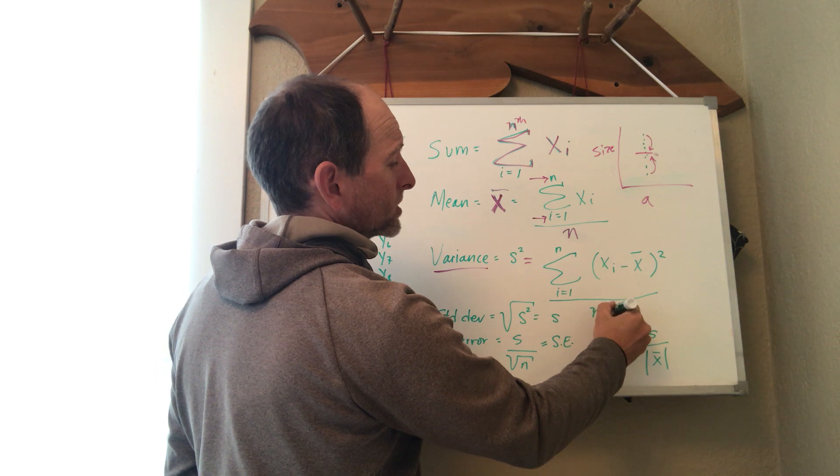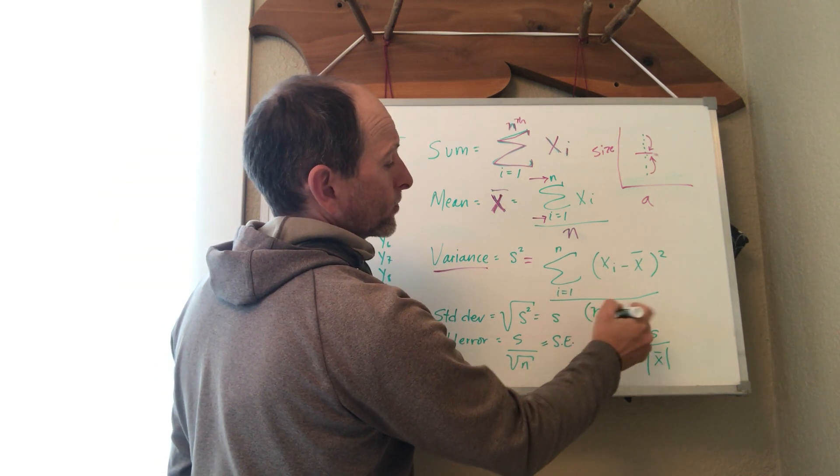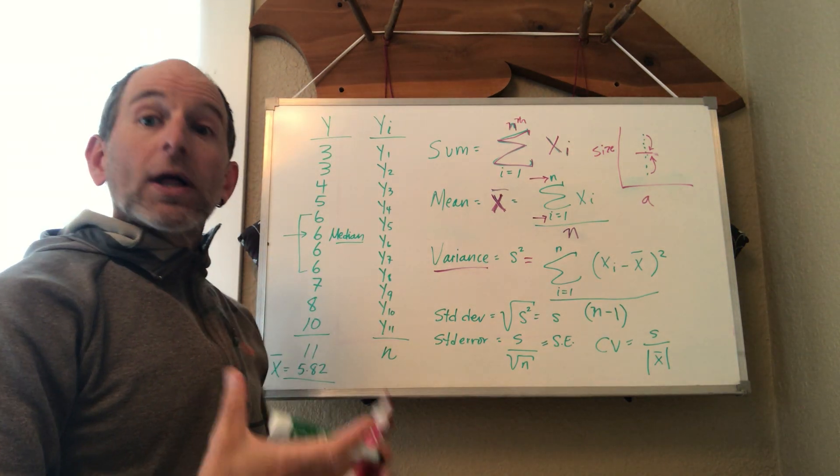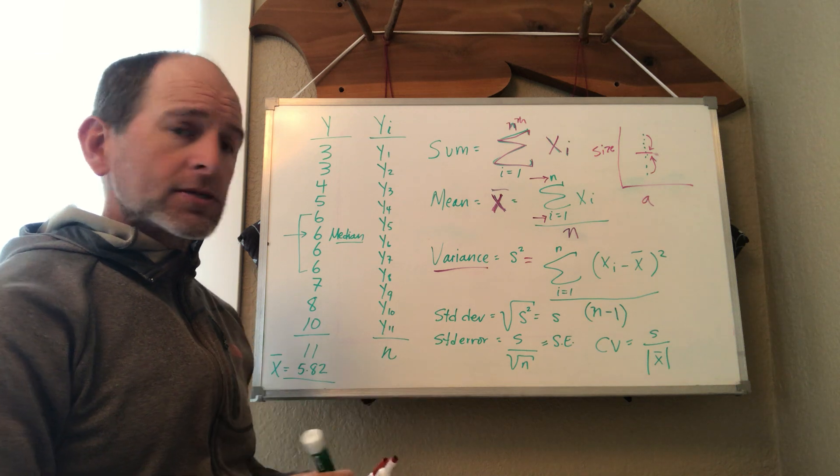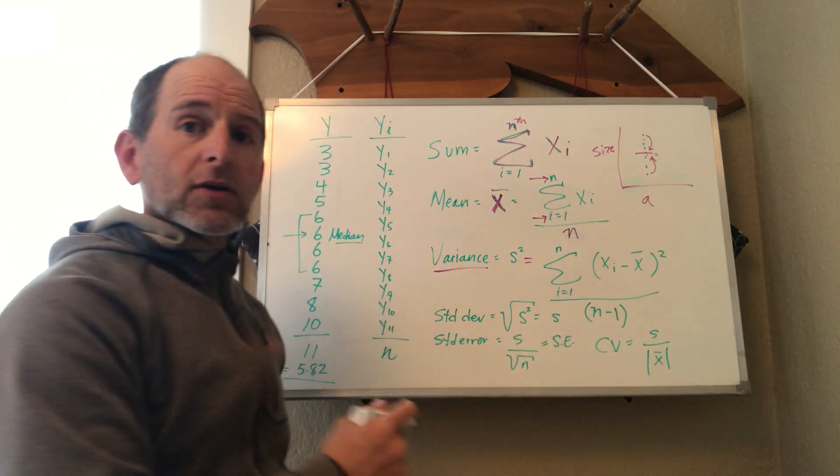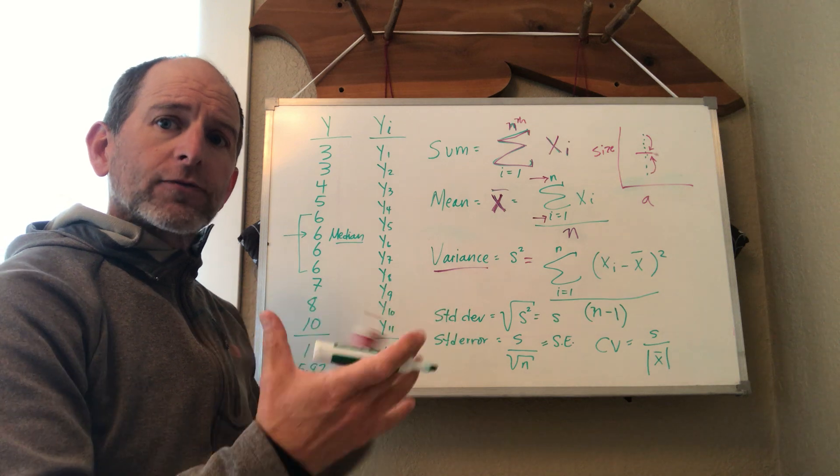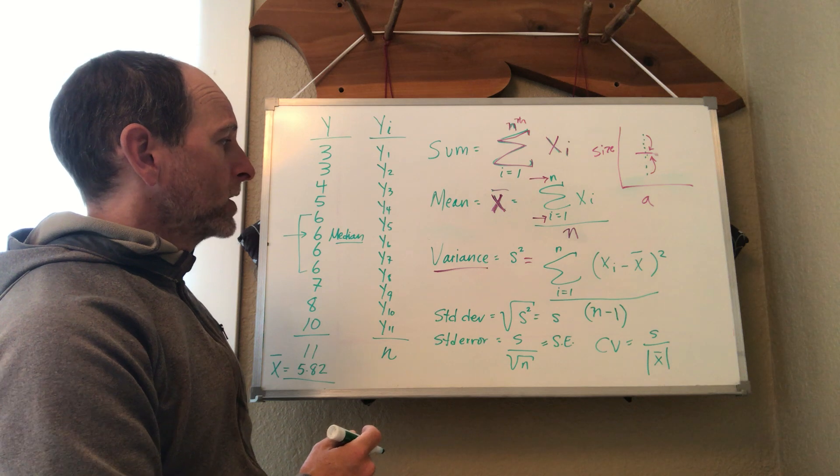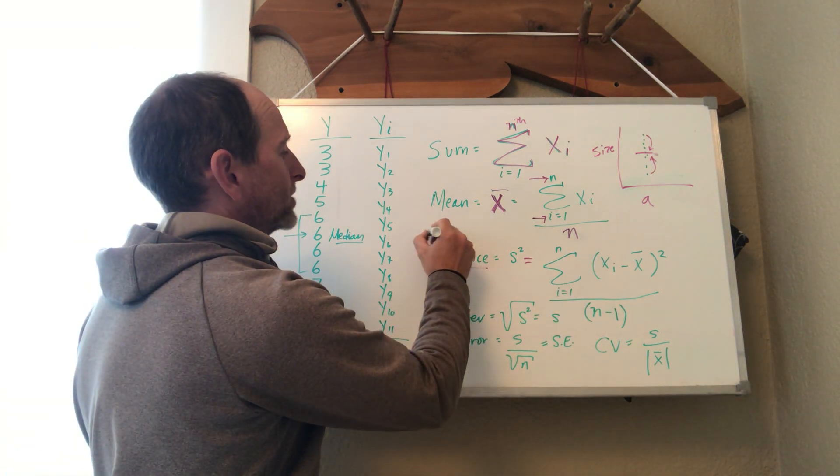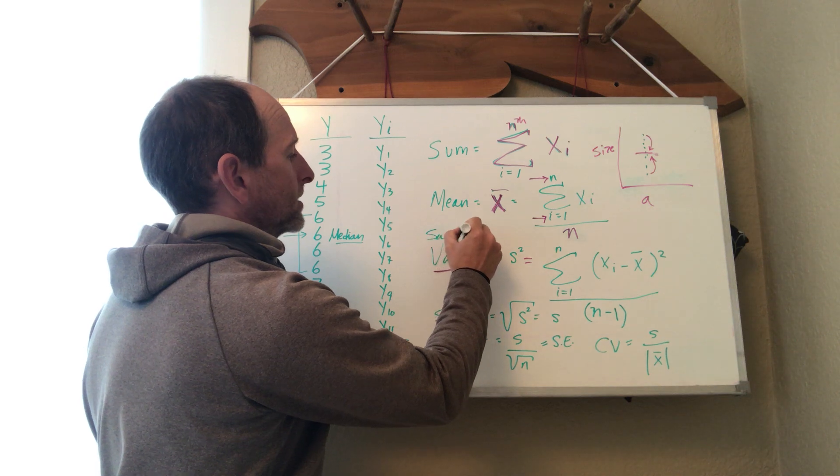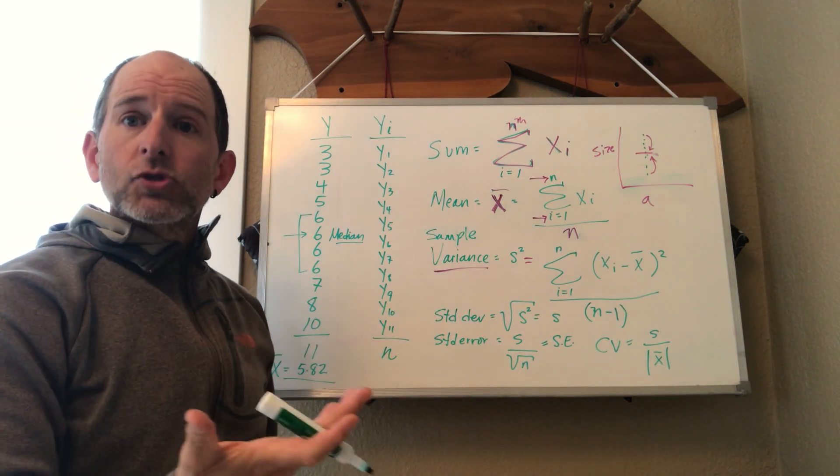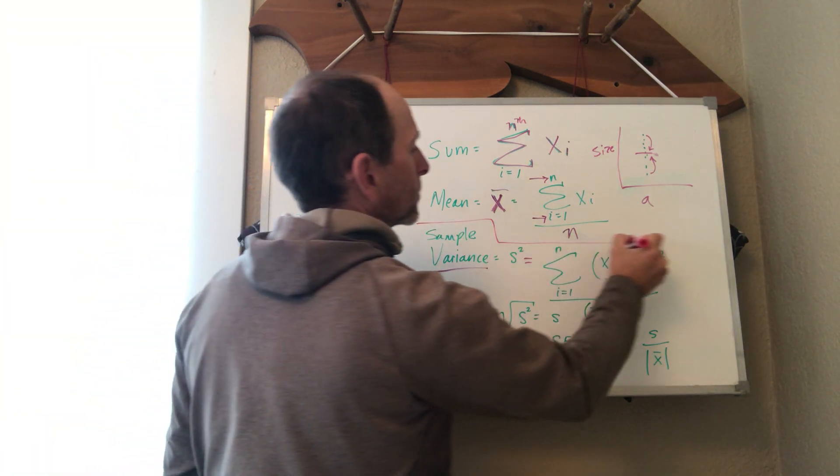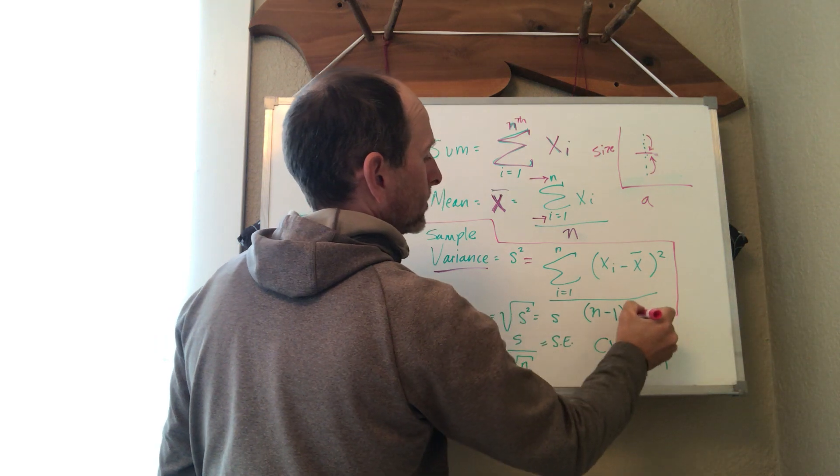Or in this case, we're going to call it n minus 1. And we'll have another little lecture that talks about what degrees of freedom is. But for us, we're going to divide by n minus 1 instead of n. We're kind of accounting for the fact that this is a sample by subtracting 1 from our total number of observations. When we do this, we've actually measured what's called the sample variance rather than the true variance, which is an important concept. So last time we ended with variance, and here we are with sample variance.